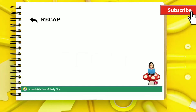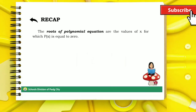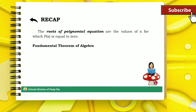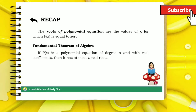Let us recall the roots of a polynomial equation. The roots of a polynomial equation are the values of x for which the polynomial is equal to 0. In our previous lesson, we also discussed the Fundamental Theorem of Algebra, which states that if a polynomial equation is of degree n and with real coefficients, then it has at most n real roots.